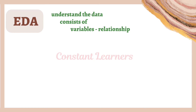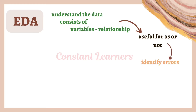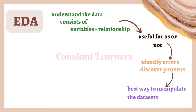Once we've understood the data, it will eventually help us determine whether the data will be useful for us or not. We have certain goals and are expecting certain answers from it, so after understanding the data we can identify whether it will be able to answer our questions. When the data has been explored and studied in detail, data scientists will also be able to identify errors and discover patterns within the data. Understanding the relationship between variables is essentially identifying the patterns in the data set.